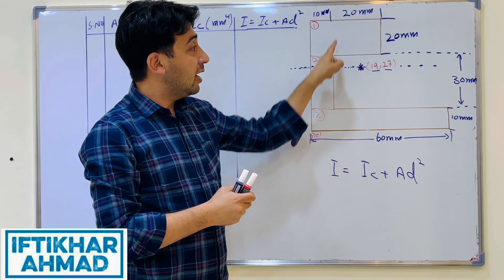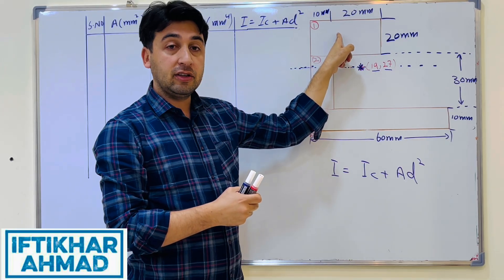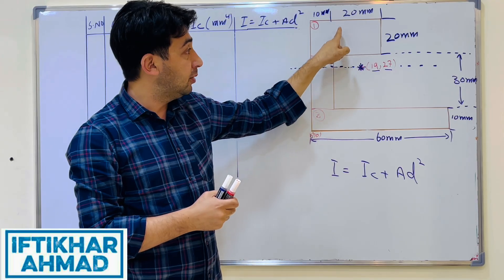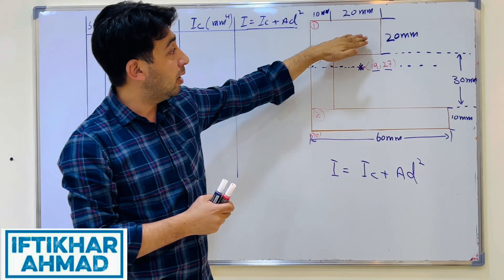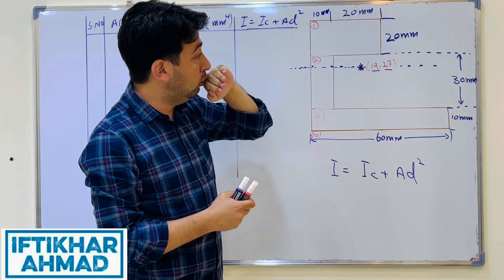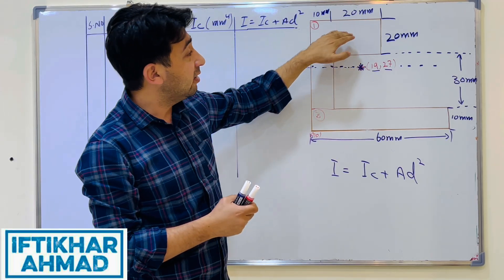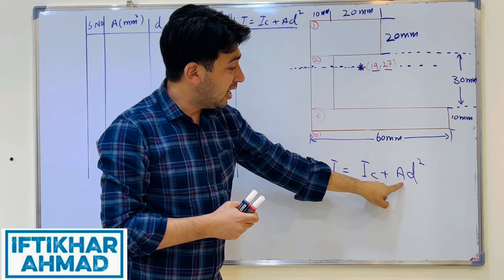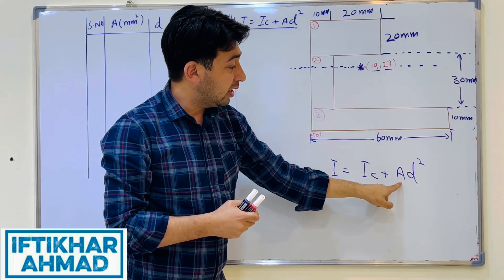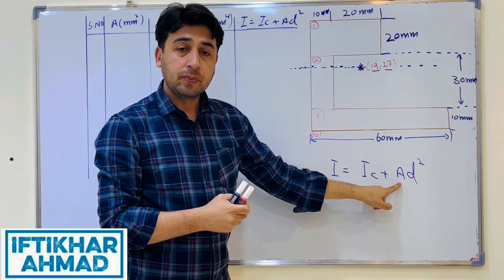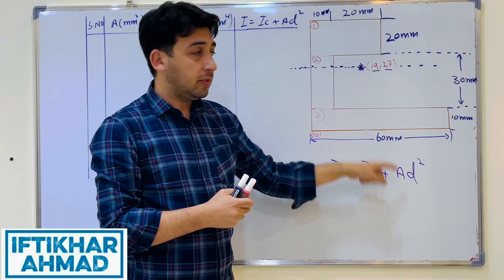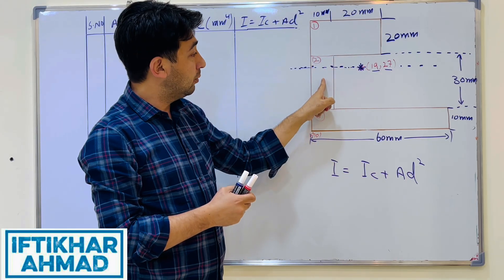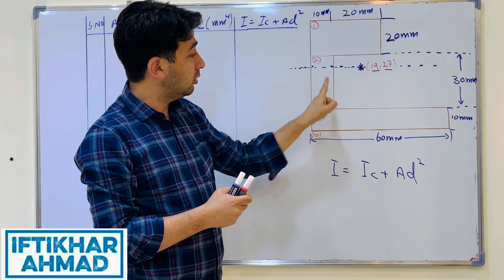IC is the moment of inertia of each individual shape — shape 1, shape 2, and shape 3 — about its own centroidal axis. Since each sub-shape is a rectangle, we use the standard formula. A is the area of each shape: area of shape 1, area of shape 2, and area of shape 3.